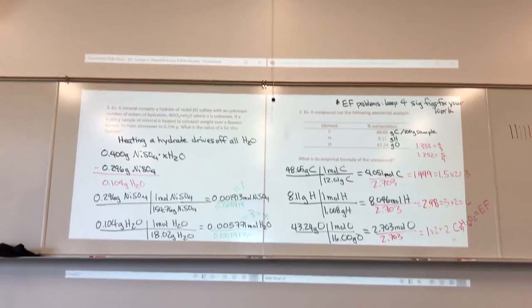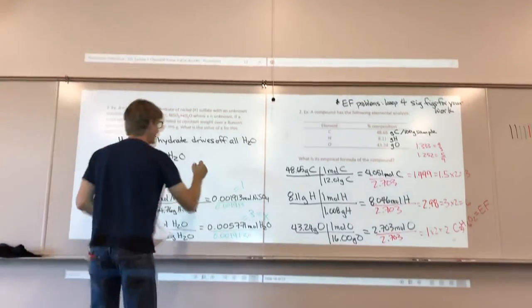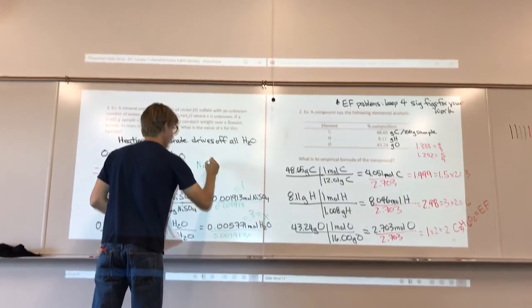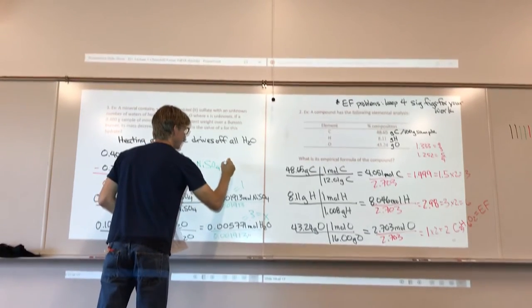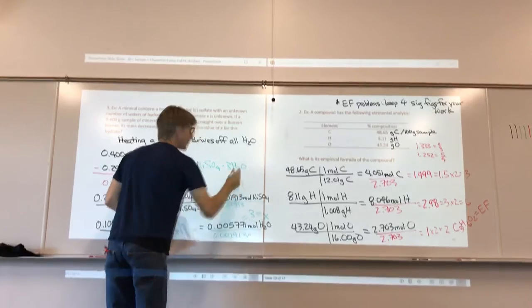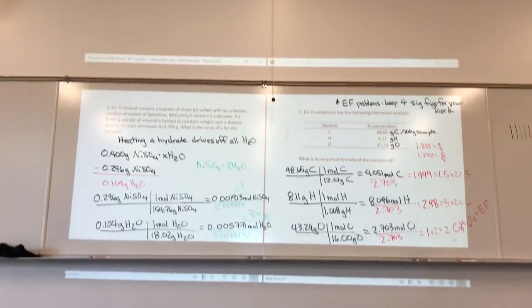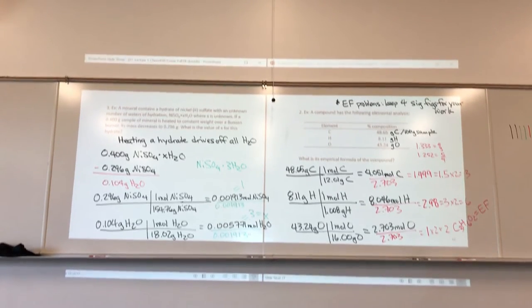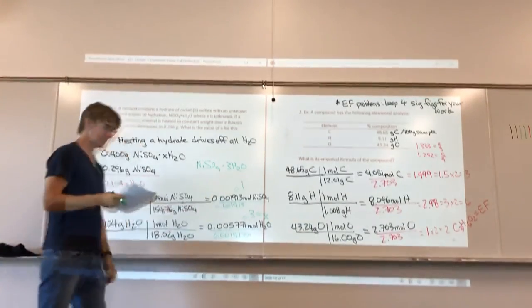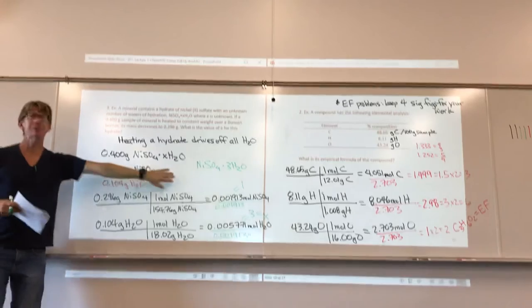The value of X for this hydrate is 3. The name of that compound is nickel sulfate trihydrate, with everything run together and no spaces.